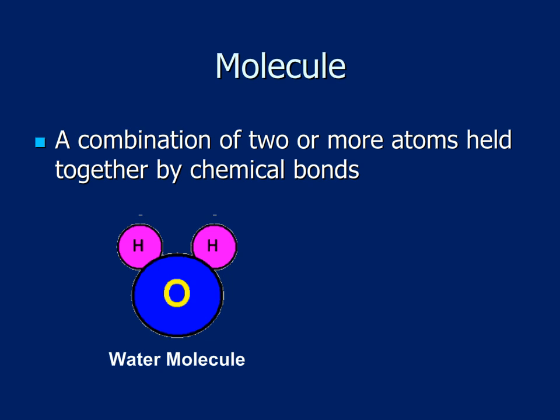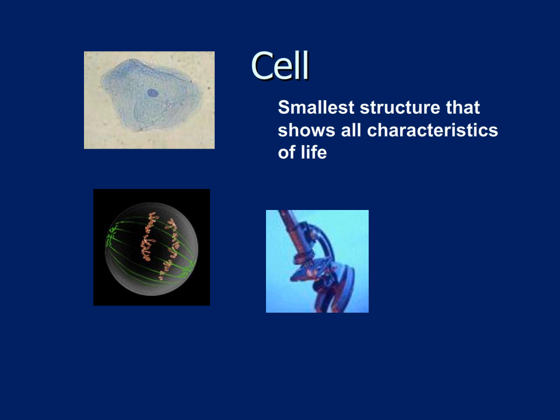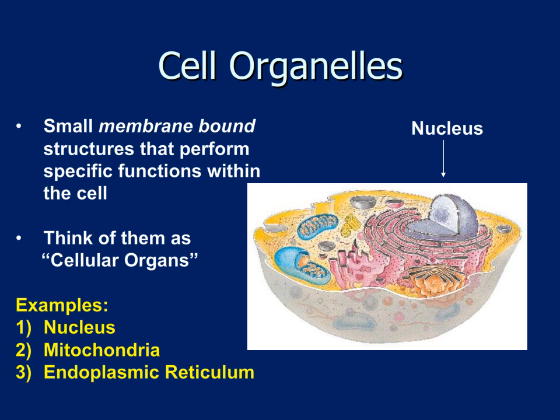The next higher level is the cell — the smallest structure that shows all the characteristics of life. Cells can reproduce, contain genetic information, and regulate their own physiological processes. Within cells, we find cellular organelles: small, membrane-bound structures that perform specific functions. For example, mitochondria help generate ATP; the nucleus contains the DNA and RNA that direct the cell's activities; and the endoplasmic reticulum helps synthesize proteins and lipids, and detoxify certain compounds. We'll talk more about cells and organelles in a couple more chapters.